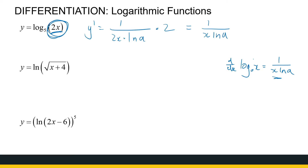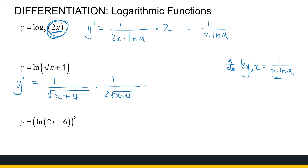The next one: ln of a function of a function — there's a lot going on. It's ln of something, the root of something, so there are actually three functions. With the chain rule, the derivative of ln of something is 1 over that thing times the derivative of that thing. That thing is root of x plus 4. The derivative of that is 1 over 2 root(x+4) times the derivative of x plus 4, which is thankfully just 1. We can simplify nicely because we've got root(x+4) times root(x+4) — that gives 1 over 2(x+4).